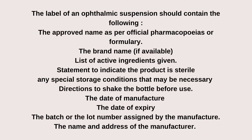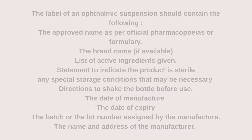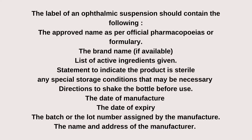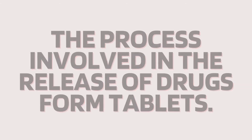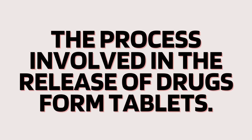The label should also include the date of manufacture, the date of expiry, the batch or lot number assigned by the manufacturer, and the name and address of the manufacturer. The second question is: what is the process involved in the release of drugs from tablets?